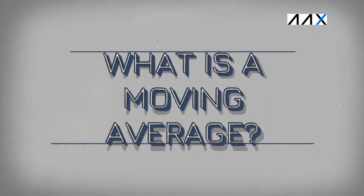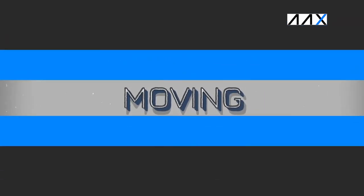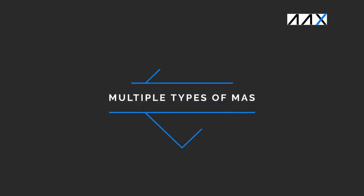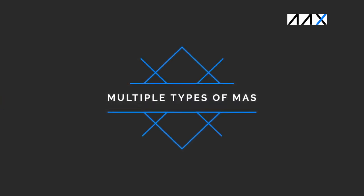What is a Moving Average? There are two main types of Moving Averages. Firstly, you have the Simple Moving Average, the SMA. And secondly, you have the Exponential Moving Average, the EMA.